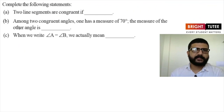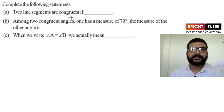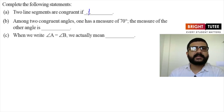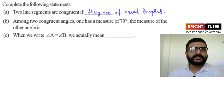The first question is: complete the following statements. The first statement is — two line segments are congruent if... We have seen that two line segments are congruent if their length is same, so the answer is: if they are of equal length. The second statement is — among two congruent angles, one has a measure of 70 degrees; the measure of the other angle will be...